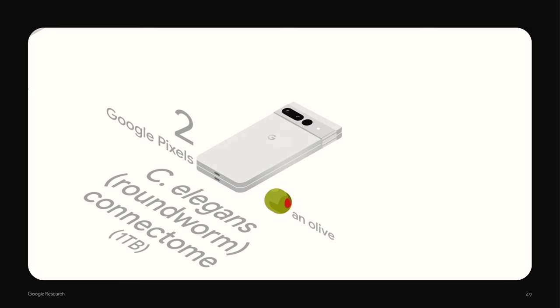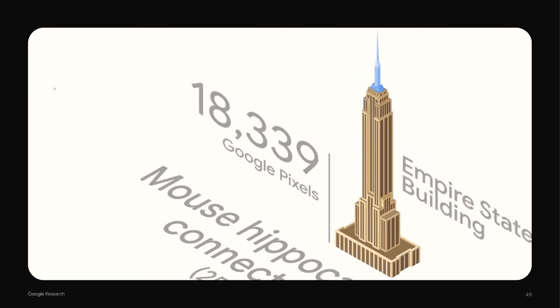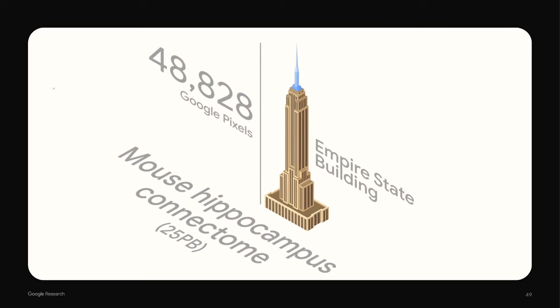The mouse brain connectome could be the largest data set in biology ever collected. This animation compares the data storage of a single Google Pixel phone, 512 gigabytes, to the amount of data required for various connectomics projects. And beyond just acquiring and storing the data, accurately processing it to make it useful for biologists is a huge challenge. But that's been our unique contribution to the field, developing computational tools that push the state-of-the-art in accuracy and then really applying them at scale to larger and larger data sets.